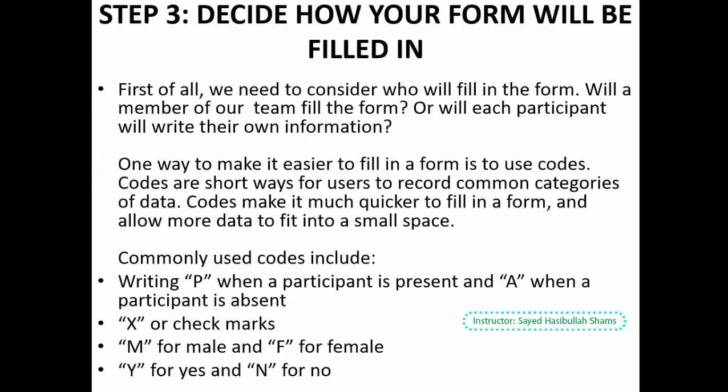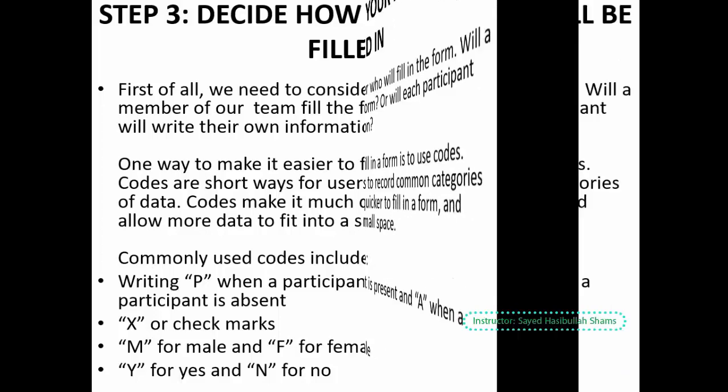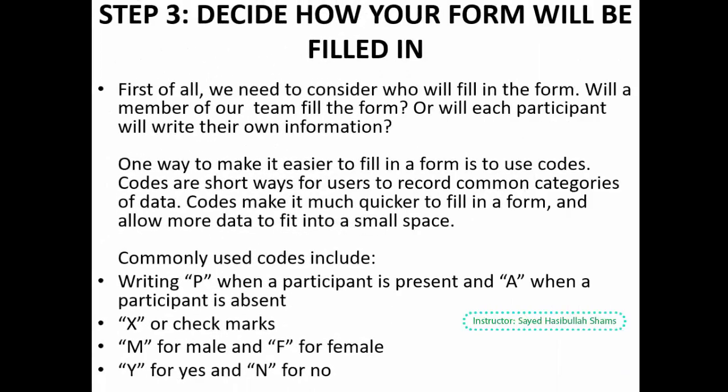Step three is: decide how your form will be filled in. It is very important because we need to consider who will fill in the form — a member of our team. One way to make it easier to fill in the form is to use codes. Codes are short ways for the user to record common categories. Using codes can make it quicker to fill in the form and allows information to fit into small spaces, so we can use different codes to help us collect data quickly.